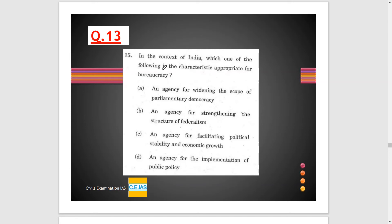Question 13: Which of the following is the appropriate characteristic of bureaucracy in the Constitution of India? Option A — an agency for widening the scope of parliamentary democracy — no, bureaucracy is not working for widening the scope of parliamentary democracy. Option B — an agency for strengthening the structure of federalism — no, it is a body working under the government; why would it talk about federalism?